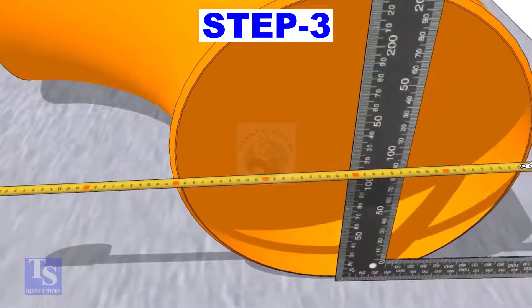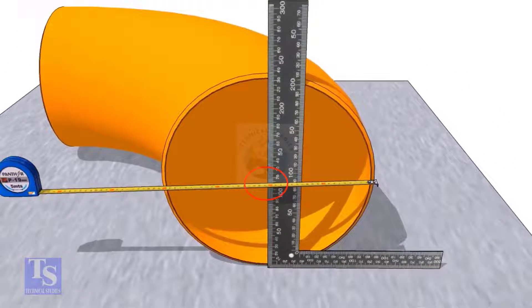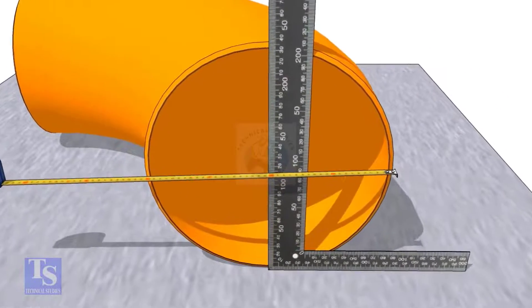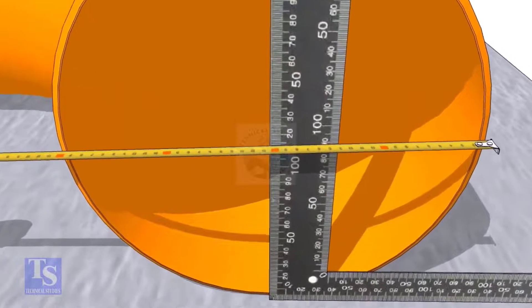Put a right angle at the center of the elbow. Make sure the distance from the edge of the elbow to the face of the right angle is equal.